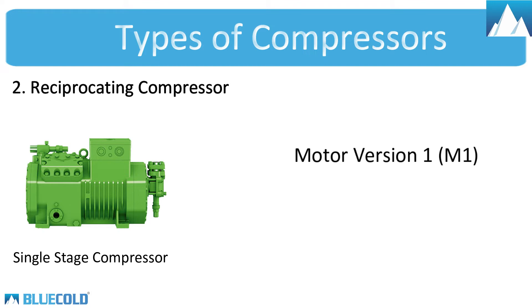Motor Version 1 — in technical sheets, it is denoted as M1. These models have bigger motors, hence they consume more power and are costly as well. It can be used for both positive and negative temperature applications with all kinds of Freon refrigerants.